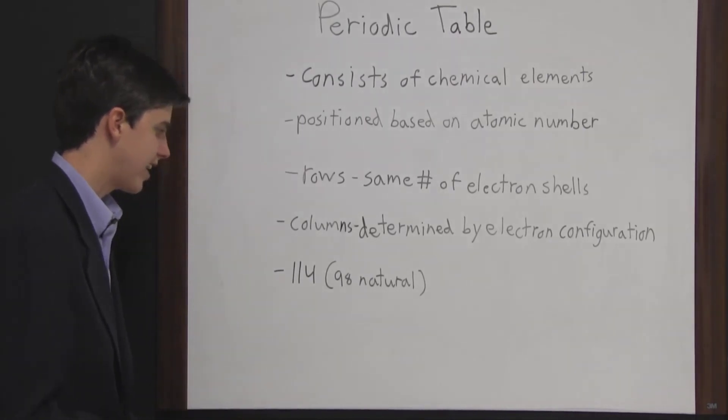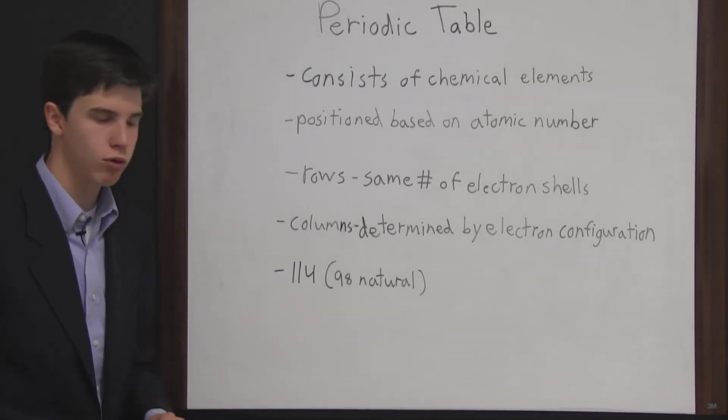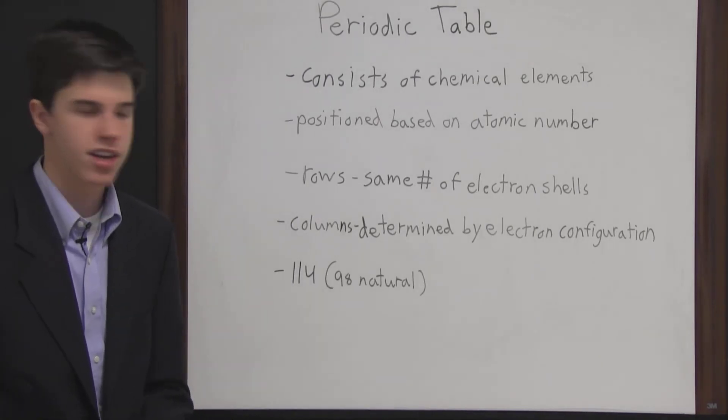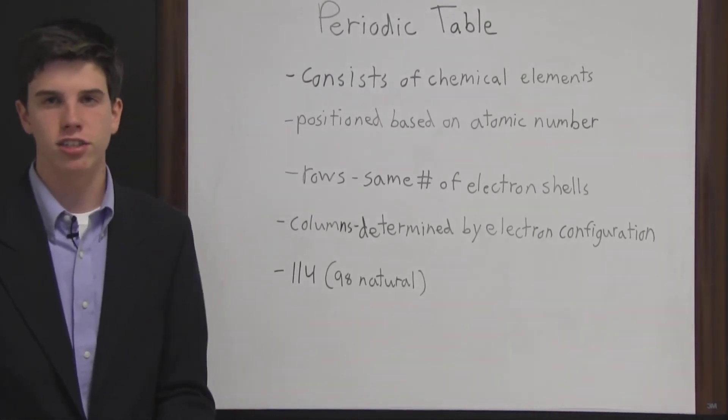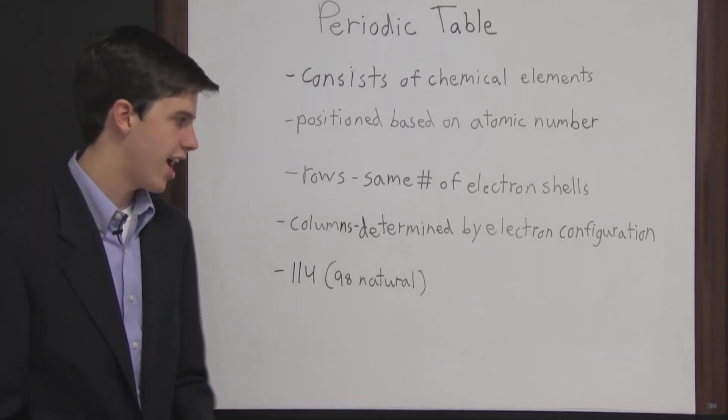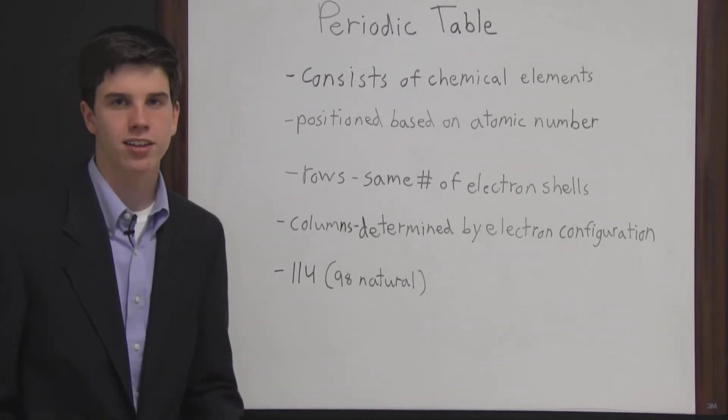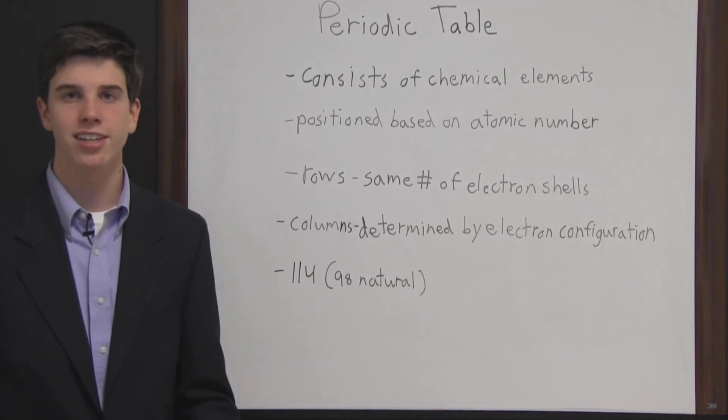There are about 118 elements out there, but only 114 have been officially recognized. And 98 of those are natural elements, ones that naturally occur in nature, such as potassium, nickel, and hydrogen. The other ones are synthetically produced by humans, such as Einsteinium.